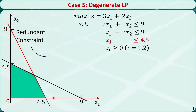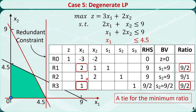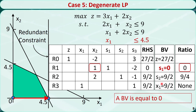Let's see what happens during the simplex iteration. The initial basic feasible solution corresponds to the origin extreme point. x1 is the entering variable because it has the most negative coefficient in row 0. After calculating the ratio, we find a tie — this is an indicator of a degenerate linear programming problem. We break the tie arbitrarily and pick one row as the pivot row. After the update, we moved to a new point and the z value increased from 0 to 27/2. Note that we now have a basic variable equal to 0, which is another indicator that the problem is degenerate.